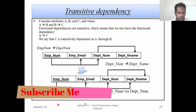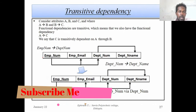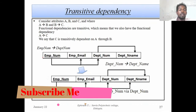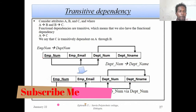Now let's look at Transitive Dependency. Transitive Dependency involves attributes that are not simply a primary or foreign key relationship, but a chained relationship. We call it Transitive Dependency.